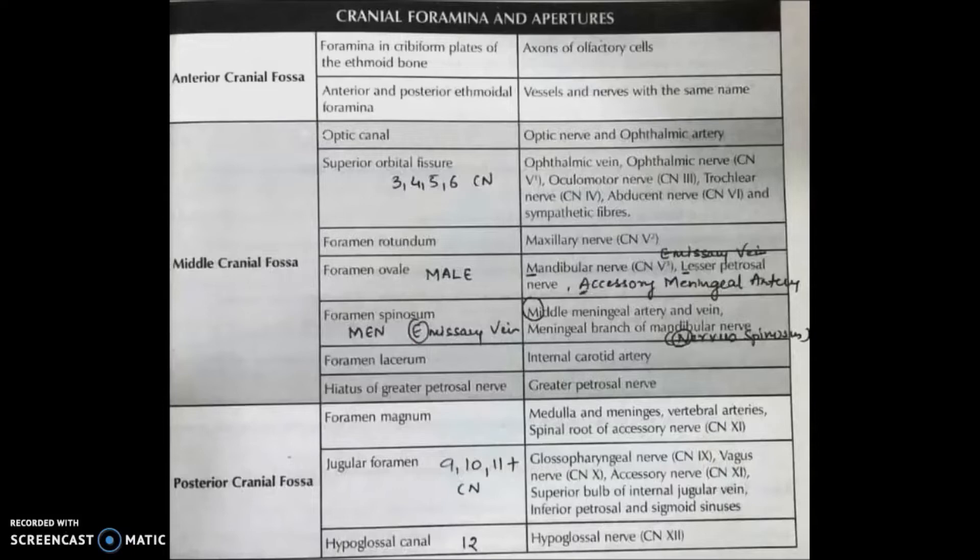In anterior cranial fossa, there are the foraminas located in the cribiform plates of ethmoid bone. Through them, the axons of olfactory cells pass. Then we have anterior and posterior ethmoidal foramina. Through them, the vessels and nerves with the same name pass.